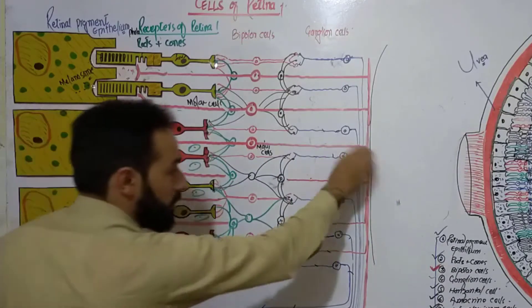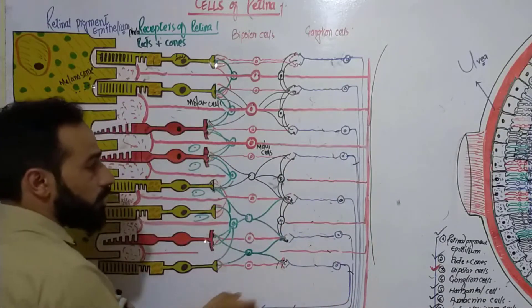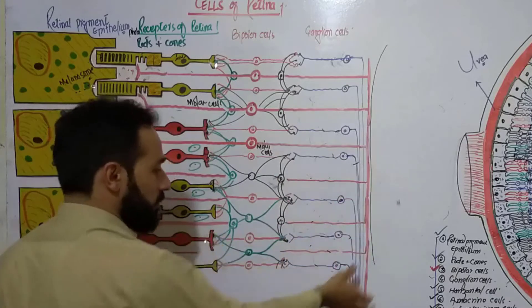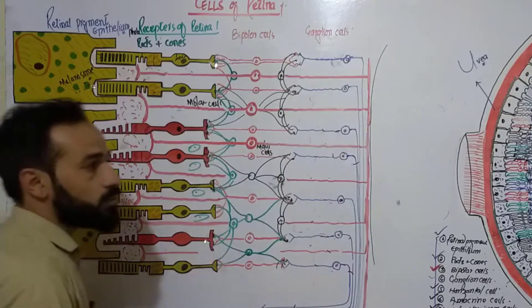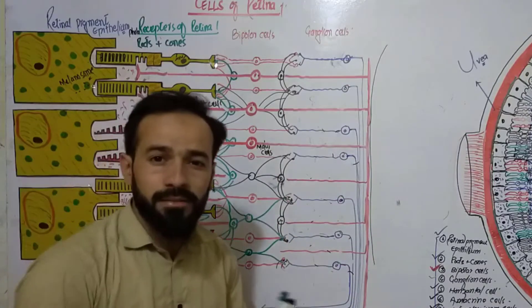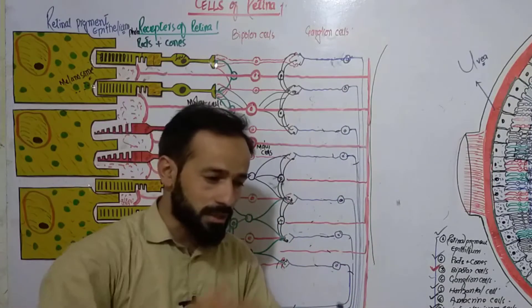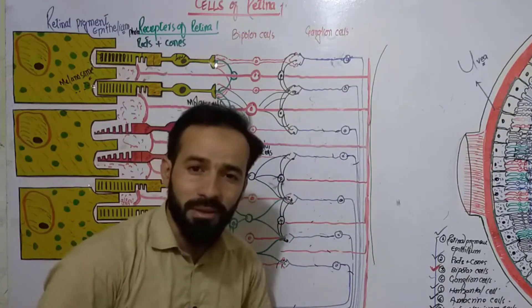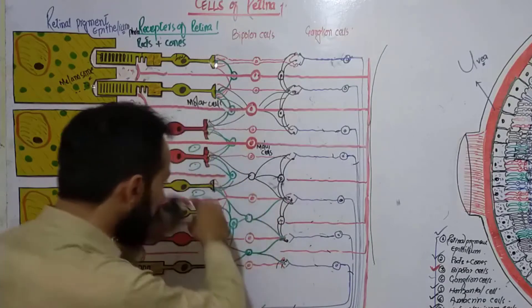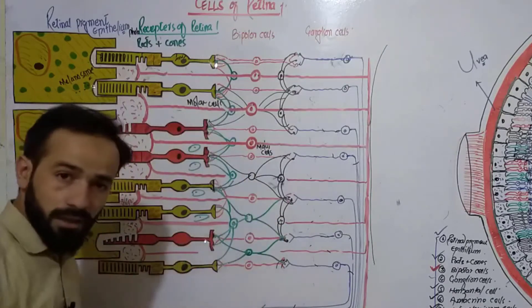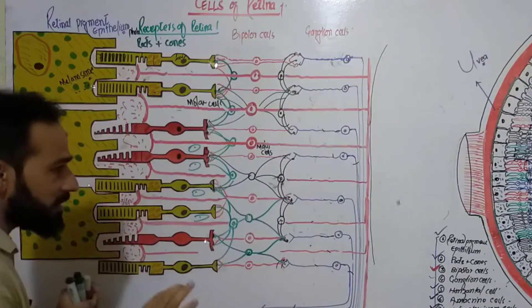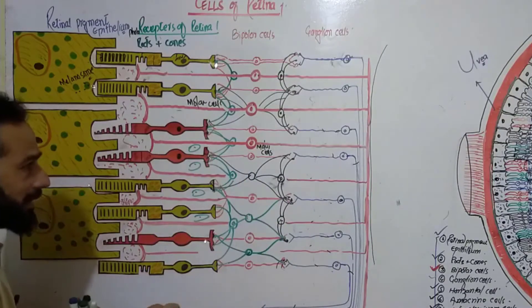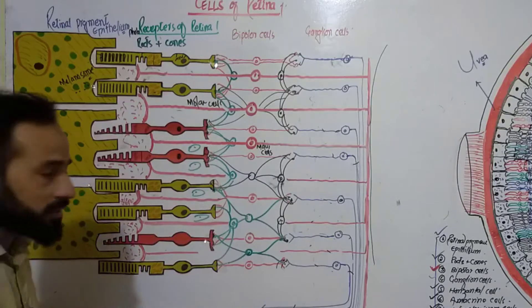These are the nerve fibers of the ganglion cells which are leaving the eye and going towards the central nervous system, carrying those impulses which have been created here. This was a little relation to the previous lecture.